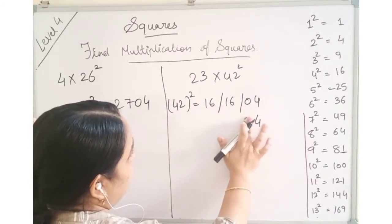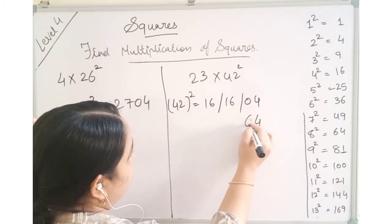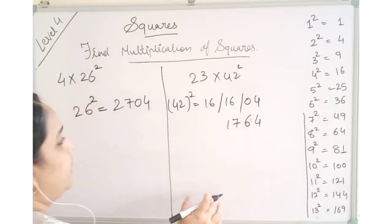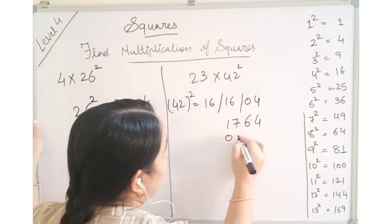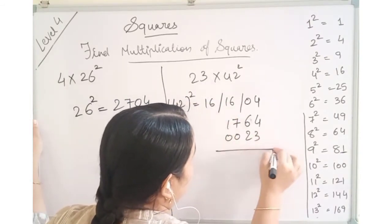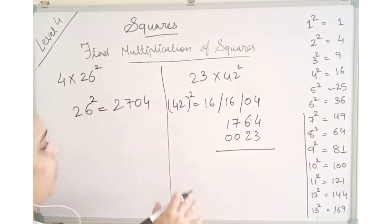Simplify this. 6 went here. So 6. And this is 1764. Now multiply this with 23 with criss cross method. This will be the easiest one.